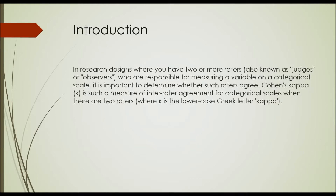In research designs where you have two or more raters, commonly called judges or observers, who are responsible for measuring a variable on a categorical scale, it is important to determine whether such raters agree or disagree with each other. Cohen's Kappa, also known as K, is a measure of inter-rater agreement for categorical scales when there are two raters.